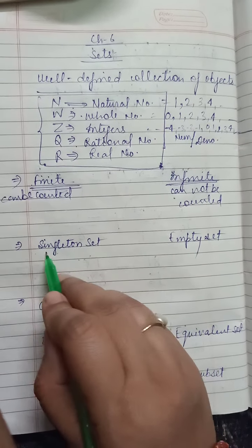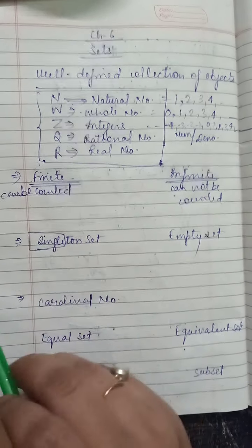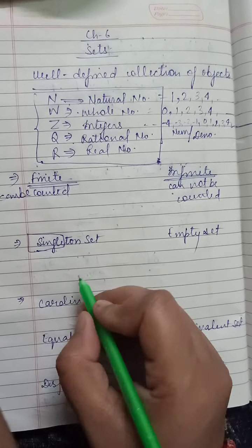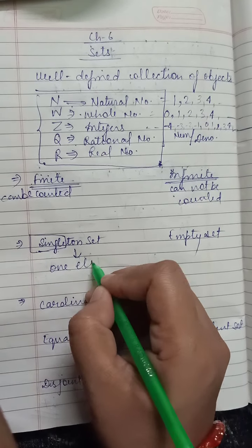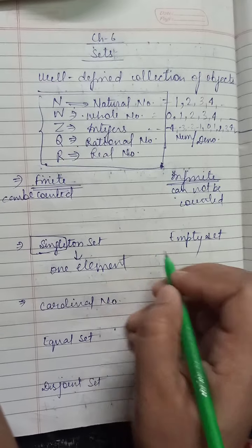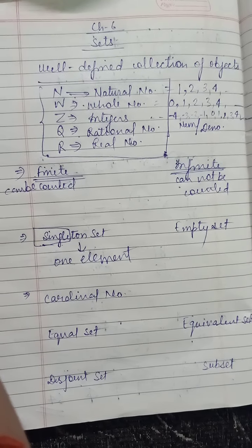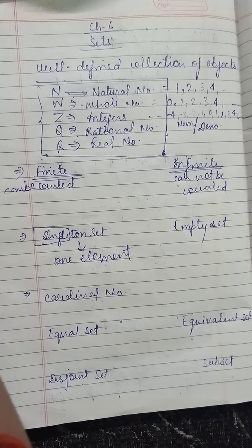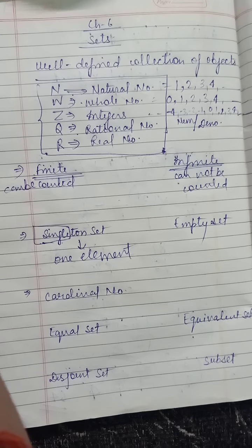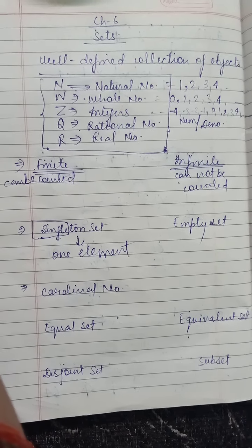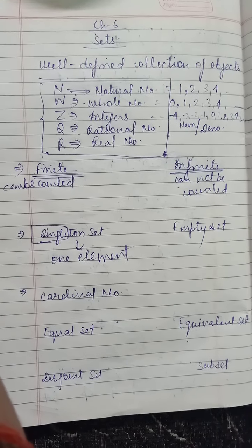Next is singleton set. We have the word 'single' in it, which means it has only one element. For example, the set of capitals of India has only one element — Delhi — so it is a singleton set. The set of capital of UP also has only one element, so it is also a singleton set.